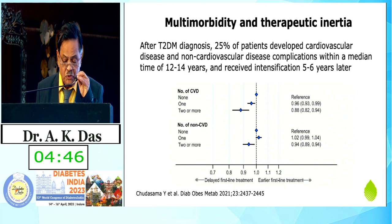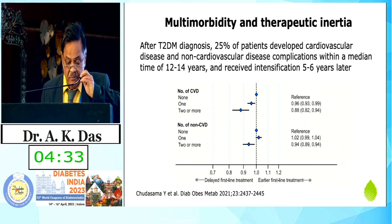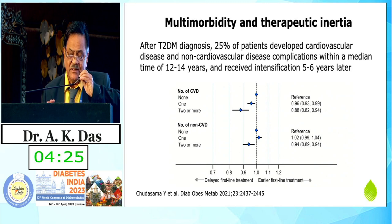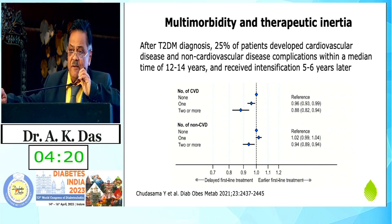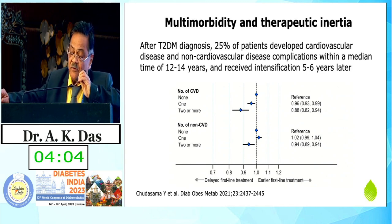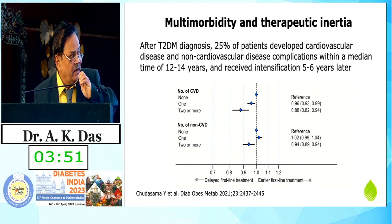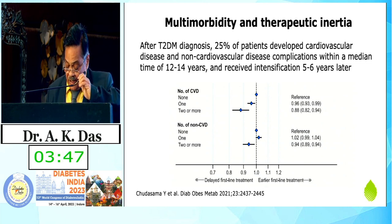After type 2 diabetes is diagnosed, 25% develop cardiovascular and non-cardiovascular complications with a median period of 12 to 14 years, and those who received intensification only 5 to 6 years later had poor outcomes. The message is clear: if you diagnose type 2 diabetes today and do not provide integrated therapy — if there is therapeutic inertia — the development of cardiovascular and cardiorenal complications is very likely. Starting intensive treatment 5 to 6 years later will not bring much benefit. Therefore, the clarion call that first-year control matters, from the Chekhov School of Medicine, clearly states that early aggressive control in the first year is of paramount importance.